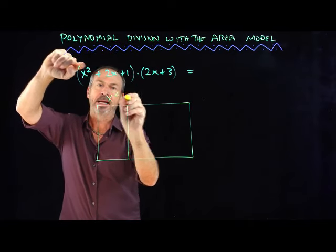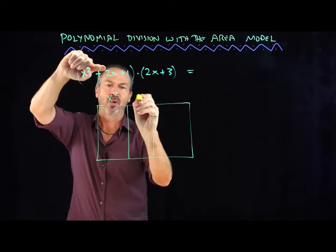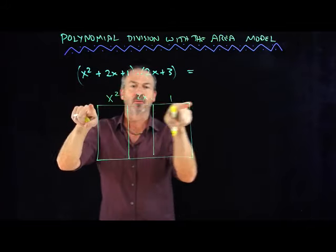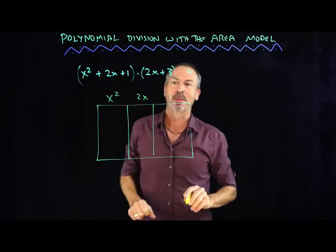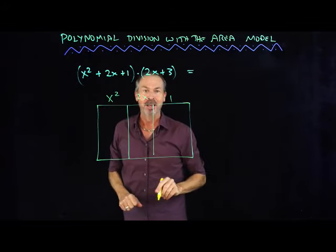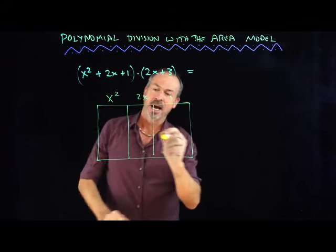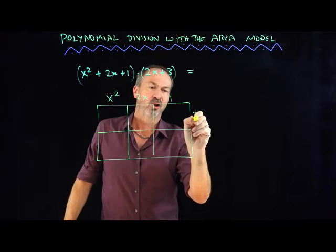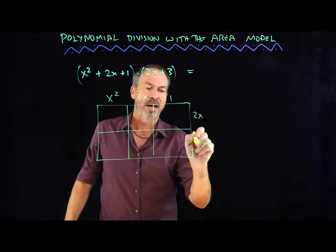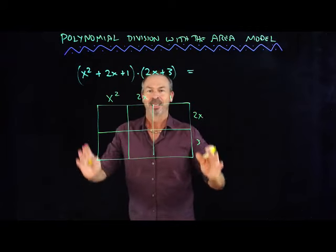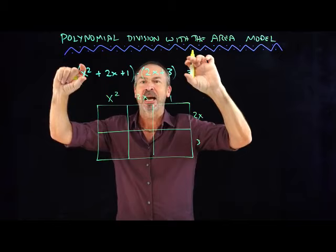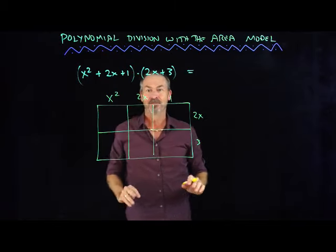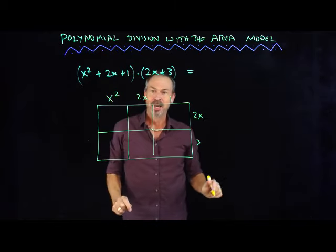There'll be an x² length, a 2x length, and a 1 length. There's a rectangle of length x² + 2x + 1, and I'll break the other side into two pieces of 2x and 3. Working out the area of this rectangle is actually working out that multiplication problem. So let's just do it.